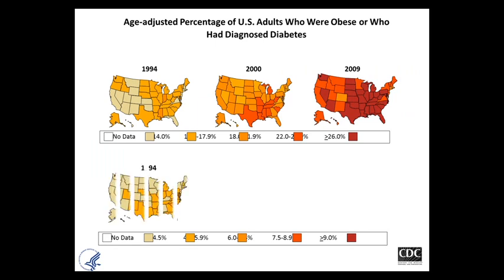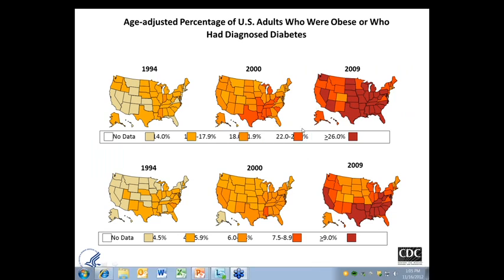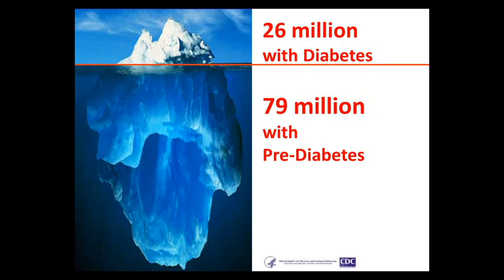CDC is known for its maps. We know that we have an epidemic of obesity, and you can see that we can almost superimpose the number of people who have obesity and diabetes. If you look from 1994 to 2009, you can see how there's been an obesity epidemic, and with that a diabetes epidemic as well.